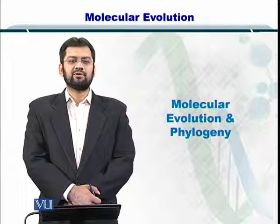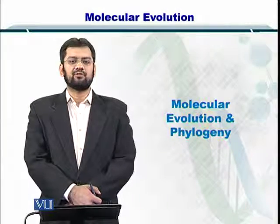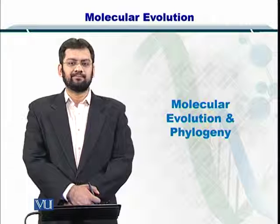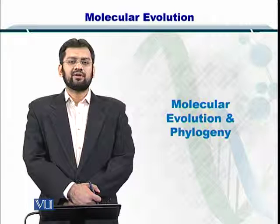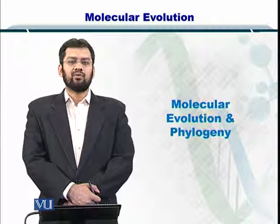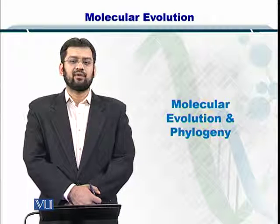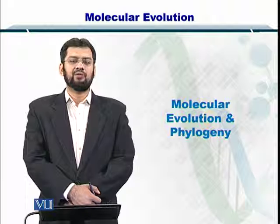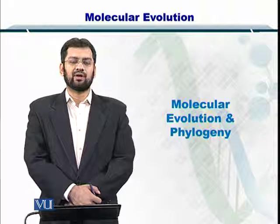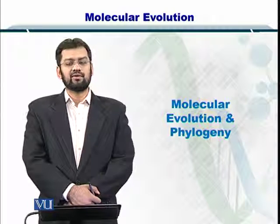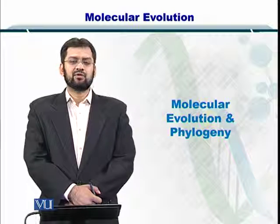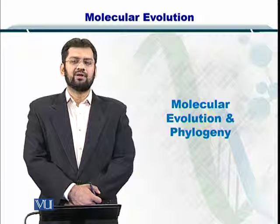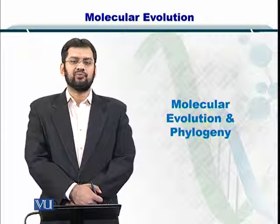Dear students, now we will be starting the chapter of molecular evolution and phylogeny. Towards understanding the molecular relationships and evolution, we need to know how species have evolved over time and what kind of variations have occurred during this process. This chapter is going to help you build a basic fundamental understanding of the algorithms that can be employed to develop the phylogeny.